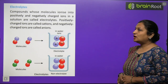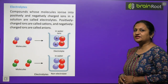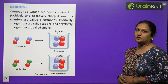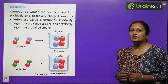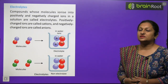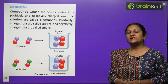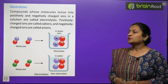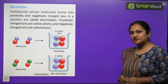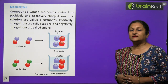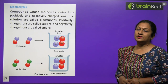Electrolyte: a compound whose molecules ionize into positively and negatively charged ions when dissolved in water is called an electrolyte. Electrolytes dissociate quickly into positively and negatively charged ions. An electrolyte will have two types of ions: positively charged ions called cations, and negatively charged ions called anions.